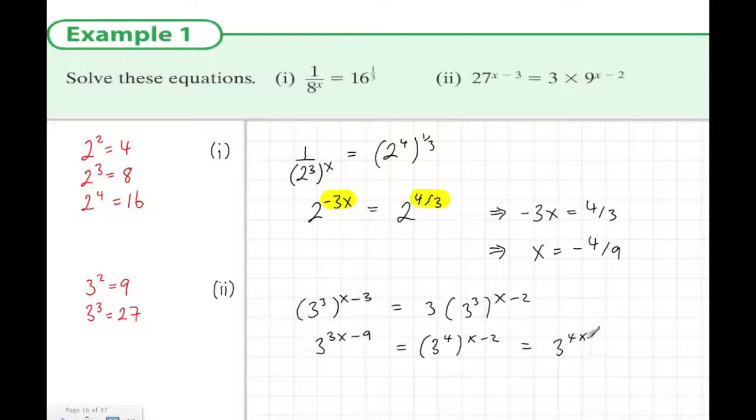Now multiply out the right-hand side, and we get 3 to the power of 4x minus 8. And this must be equal to 3x minus 9. So there's my simple equation, that 3x minus 9 is equal to 4x minus 8. Now we're going to take 3x from both sides, and add 9 to both sides, and that will give us that minus 1 is equal to x.